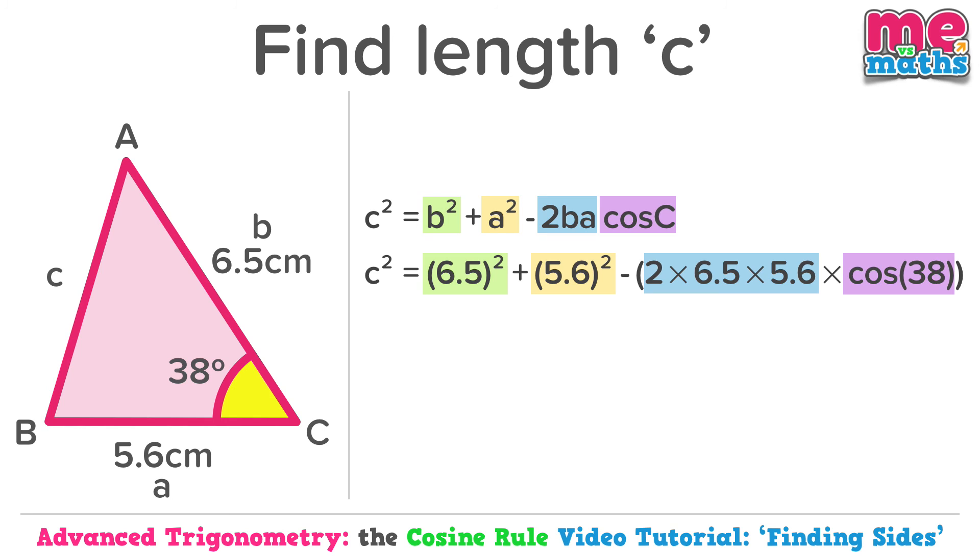So c squared is equal to 16.2428. Let's square root that and find that c, to one decimal place, is 4.0 centimeters.